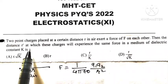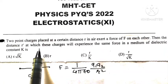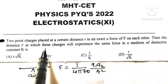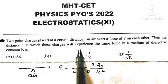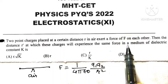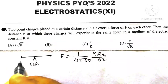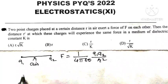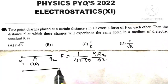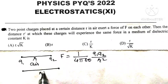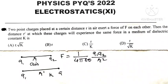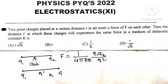We need to find the distance R' at which these same two charges Q1 and Q2 will experience the same force, but now placed in a medium of dielectric constant K. That is what we have to find.